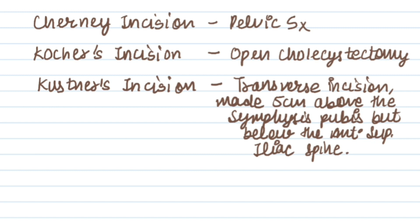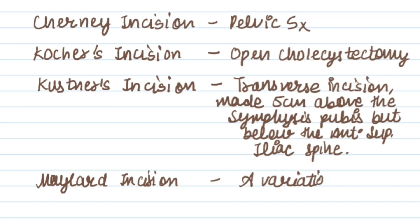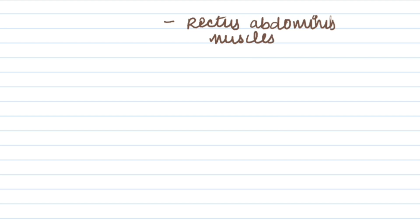The next incision is the Maylard incision. It is used as a variation of the Pfannenstiel incision. In the Maylard incision, the rectus abdominis muscles are sectioned transversely to permit wider access to the pelvis.